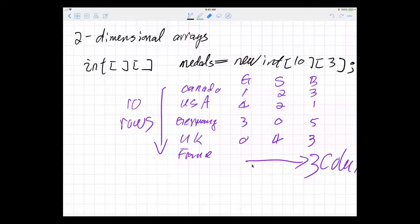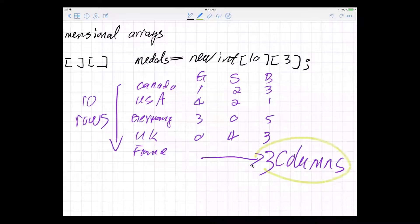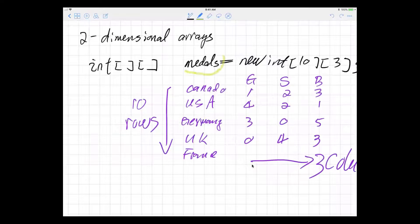The rows will be the country and the columns will be the medals. So we declare medals is our variable name as int. It's an integer, but we are using two matching pairs of square brackets to declare two-dimensional. The first is the country, the second is the medals.